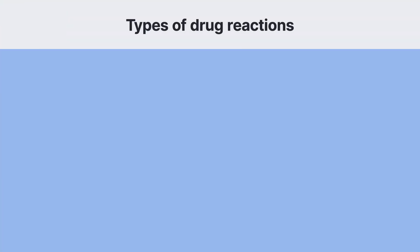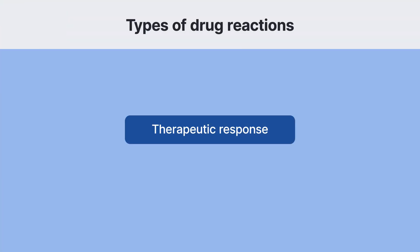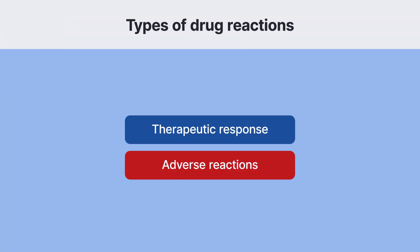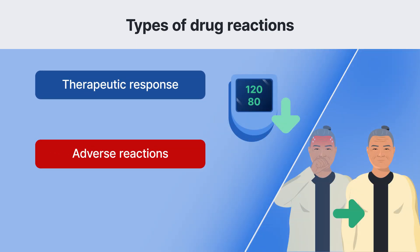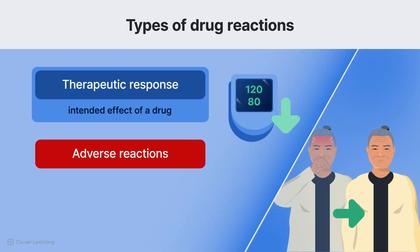There are two main types of drug reactions: the therapeutic response and adverse reactions. The therapeutic response is the intended effect of a drug. It signifies the medication is achieving its goal, such as lowering blood pressure or reducing inflammation.